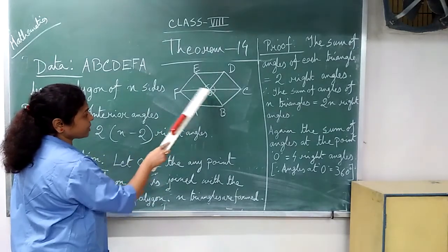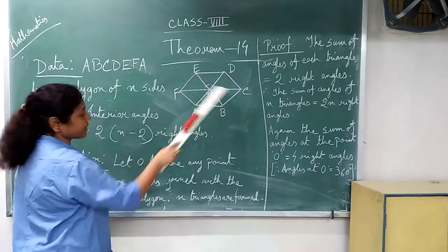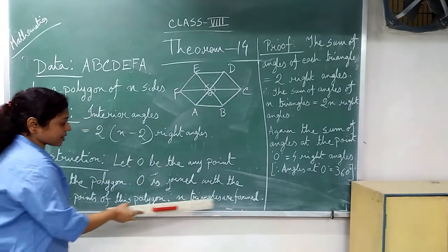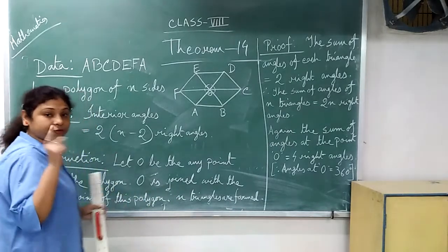1, 2, 3 angular points and with this type of points. So n triangles are formed, n number of triangles are formed.